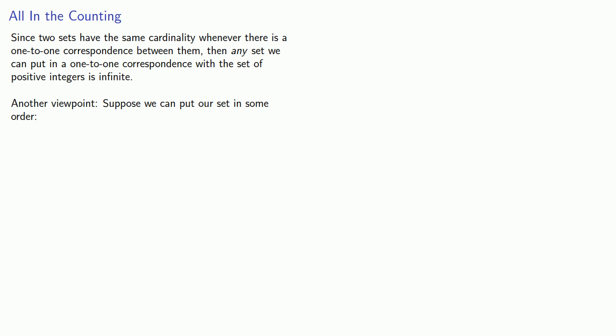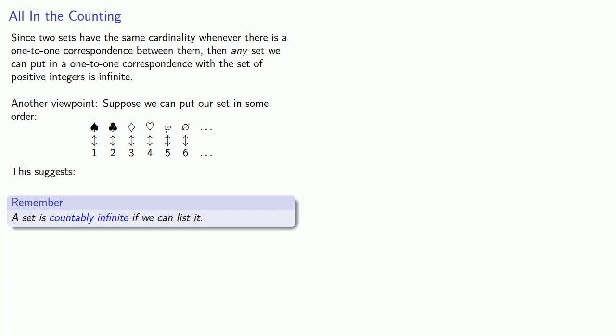So we have a first element, a second, a third, and so on. This gives us a very natural way of putting the two sets into one-to-one correspondence. And this suggests the following: A set is countably infinite if we can list it.